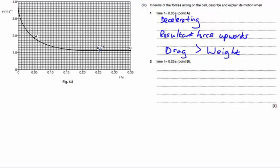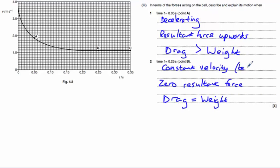At point B, we will see that the velocity is now no longer changing. So it is travelling at a constant velocity, which must mean that there is a zero resultant force. Therefore, drag at this point is equal to weight. Another way of saying this is that it's reached terminal velocity.